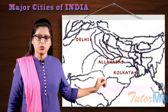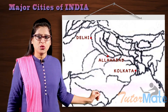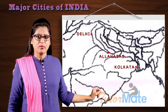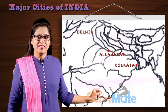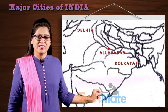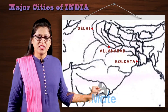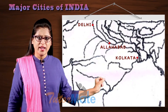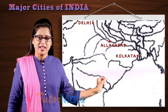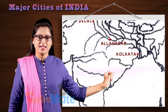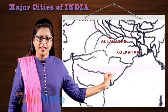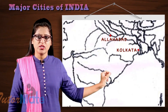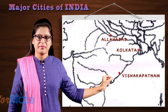Now we go towards the east coast. You can see your river Godavari. From Godavari, if you run your fingers, it makes a W. At the end of the W is your Visakhapatnam.